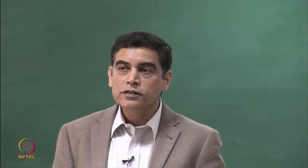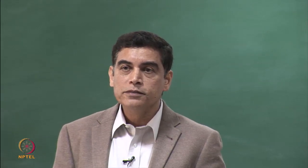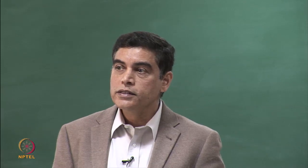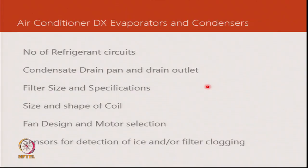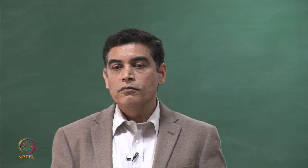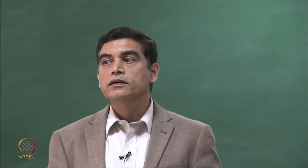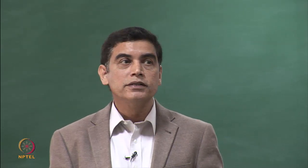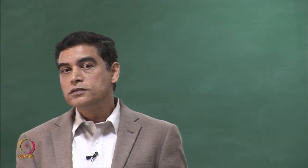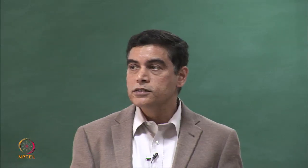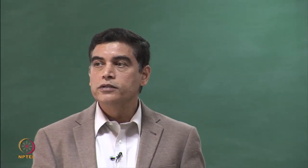One design solution is to keep the face velocity on the coil in the region of 2.5 metres per second to ensure there is no condensate carryover. The angle at which the coil is positioned also determines how well condensate flows into the drain pan. In cassette-type units installed in the ceiling, draining condensate is challenging and pumps are typically installed — a condensate drain pump coupled to a sensor ensures all moisture is expelled into a drain.